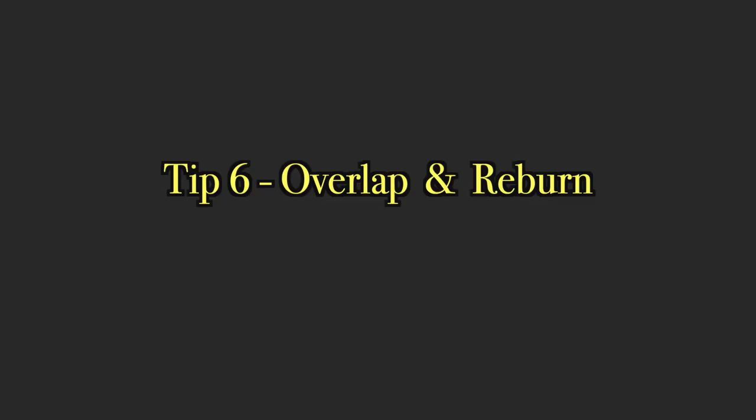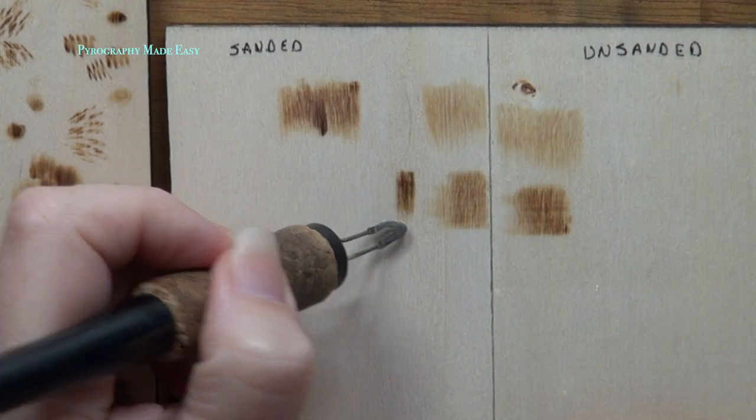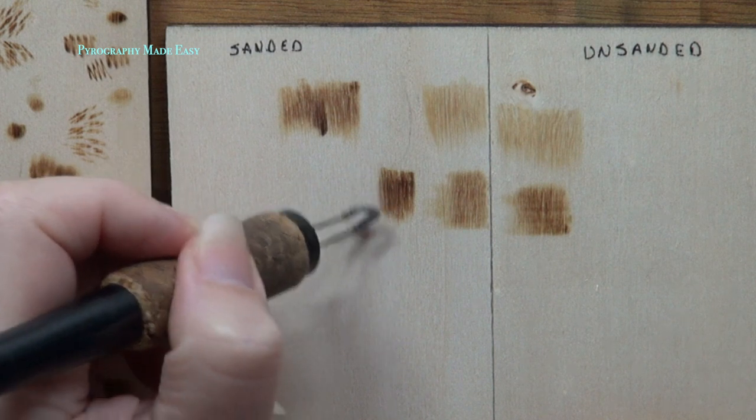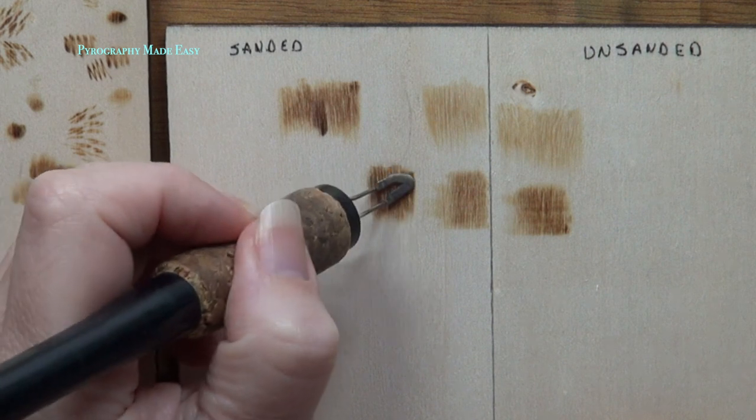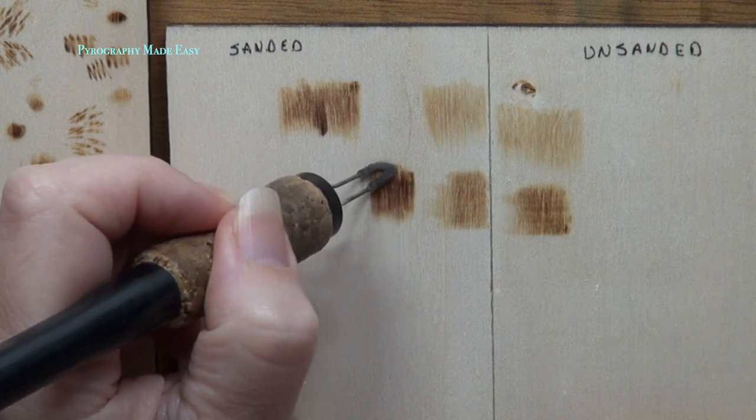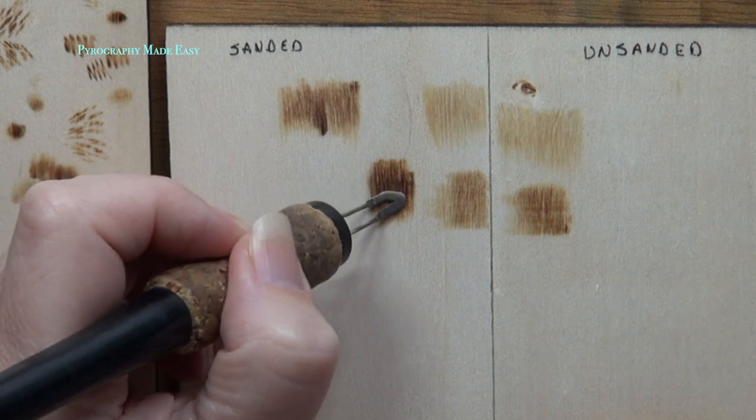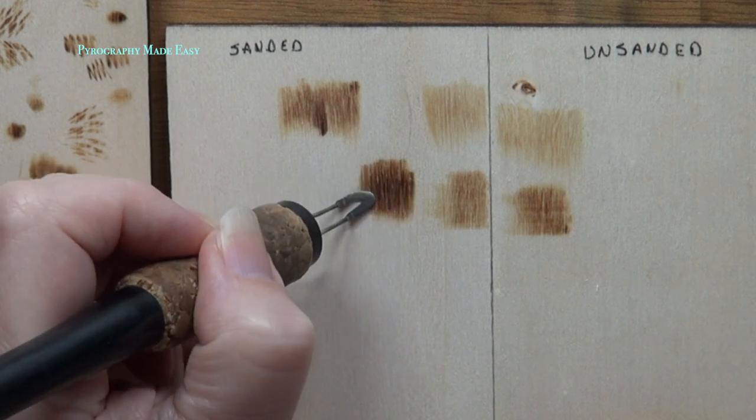Tip 6, overlap and re-burn. As you burn, slightly overlap your burn strokes. This will help prevent vertical streaks and or lines from forming. Also, re-burn over the area. This will darken up the burn, but it will help hide individual burn strokes, making the area look smoother.